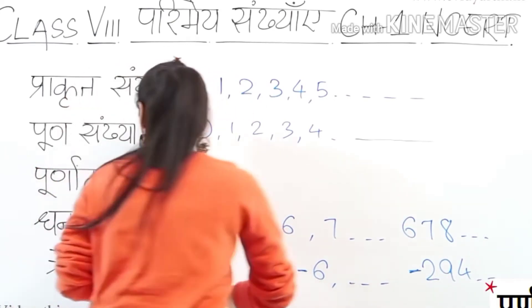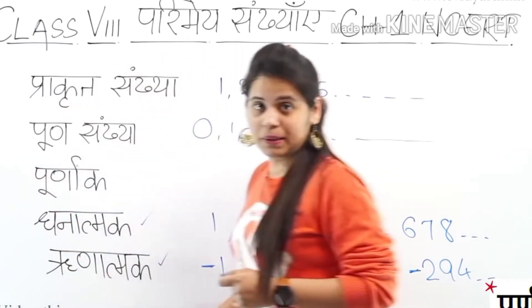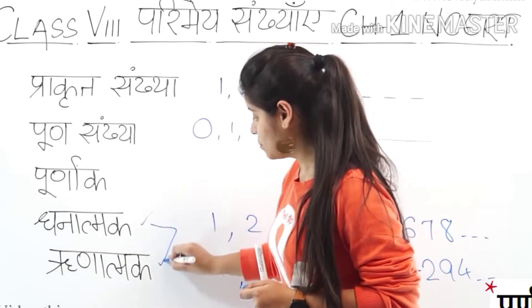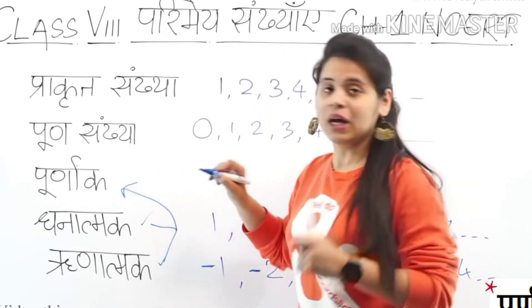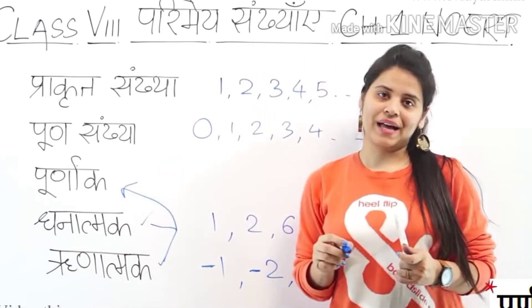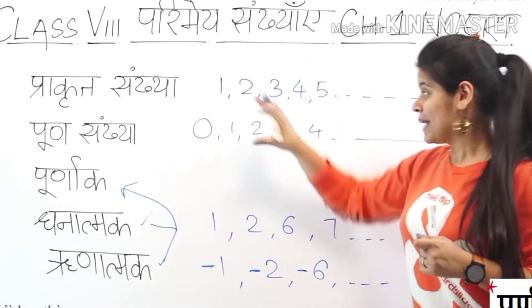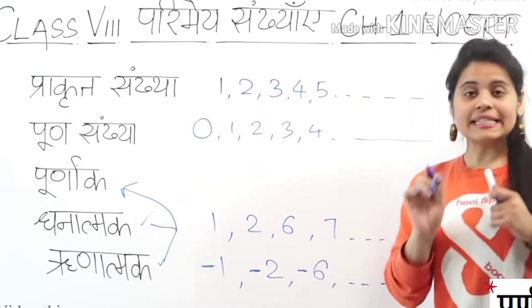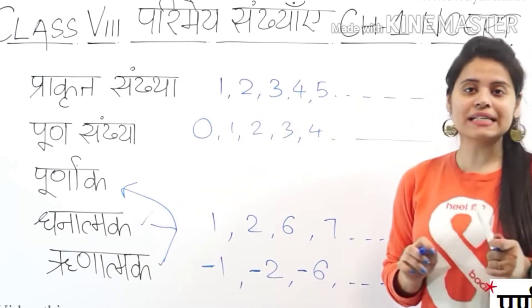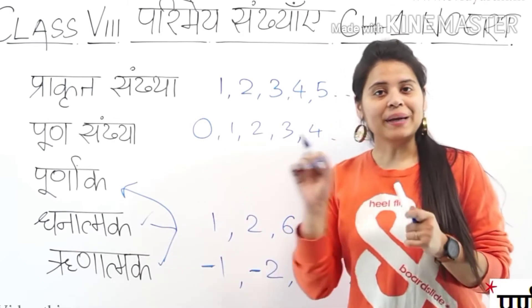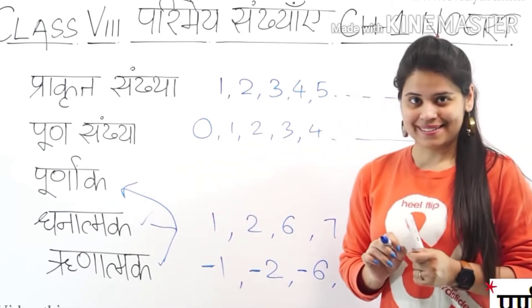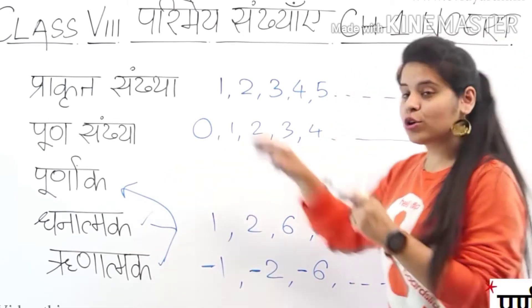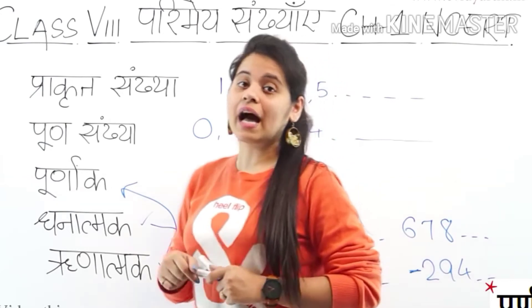This includes negative numbers — Rhinathmak — and positive numbers — Ghanathmak. Both are part of Puranakos. The Rhinathmak Sankhya (negative numbers) are also included in Puranakos in class 7. So this is what we have revised.